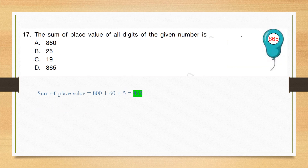Question number 17: It is a sum of place values equal to the same number — like 800 plus 60 plus 5 which is 865. So the correct answer is option D.